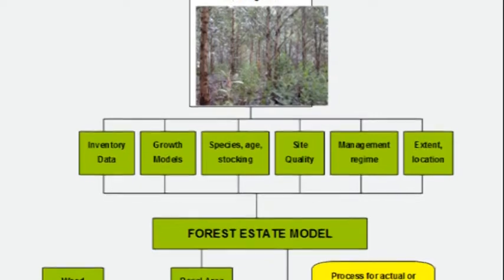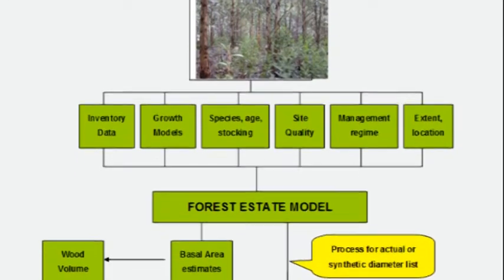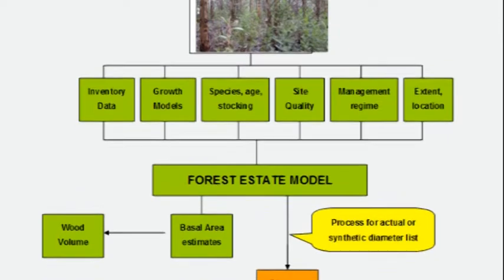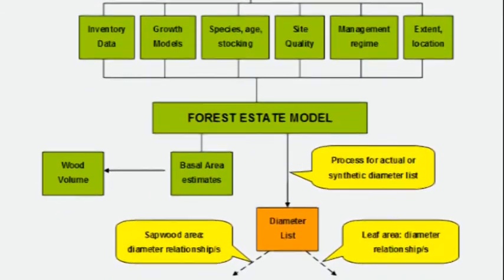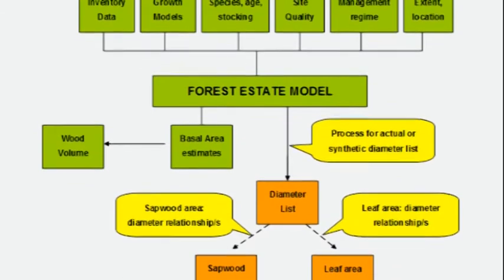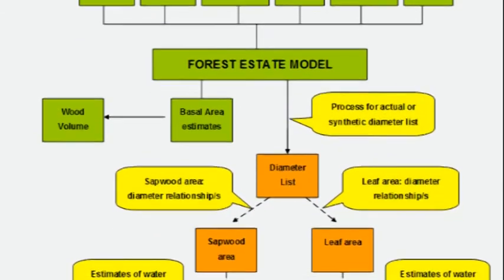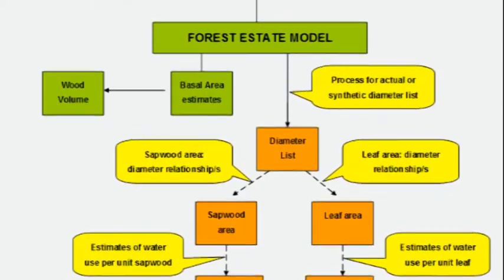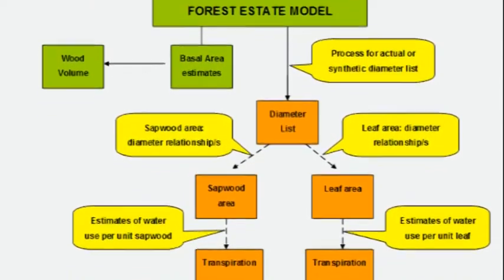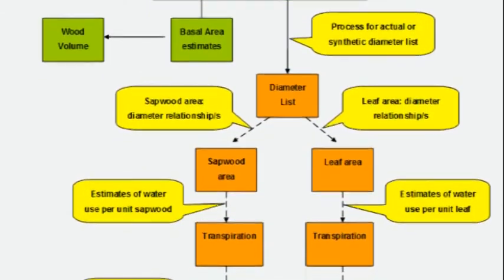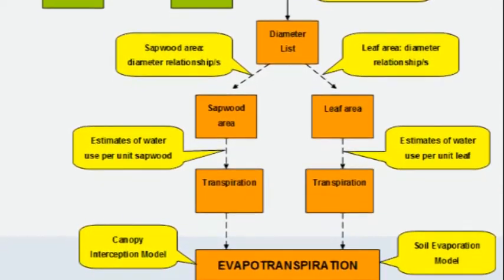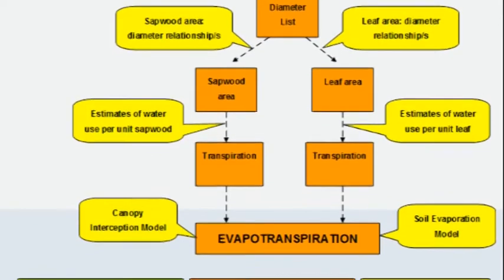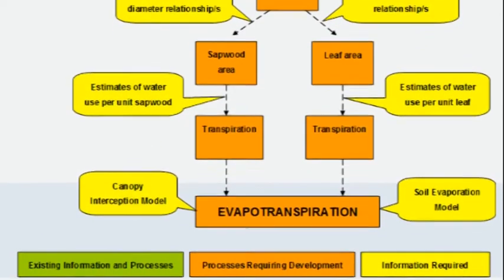The forest estate model works by taking for each planning unit the information on growth, species, age, stocking rates, management objectives, extent and location, and using that to generate a basal area estimate, from which we can estimate wood volumes into the future. What we are hoping to do with water use is to find a link between basal area — or the diameter list generated from basal area — to incorporate models on soil evaporation, canopy interception and transpiration, so that we can come up with a basal area water use function to include in the forest estate model.